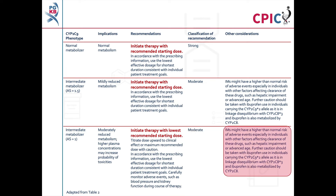CYP2C9 intermediate metabolizers may have a higher than normal risk of adverse events, particularly in patients with other factors that can affect drug clearance. Further caution should also be taken with ibuprofen use in patients carrying the CYP2C9 star 2 allele, as this allele is in linkage disequilibrium with the CYP2C8 star 3 allele.